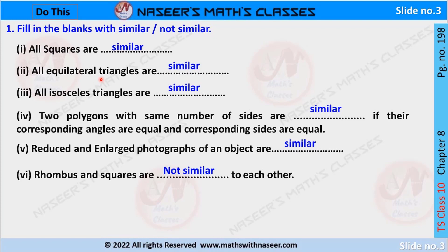The second one is: all equilateral triangles are similar. Because in an equilateral triangle all three sides are of equal length and their angles are also equal — each angle is 60 degrees. So we can say that all equilateral triangles are similar. Third, all isosceles triangles are similar because in an isosceles triangle two sides have equal length and their corresponding angles are also equal.